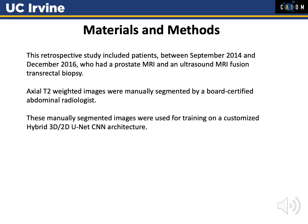For this paper, a retrospective study was completed with patients who had a prostate MRI or ultrasound-MRI fusion transrectal biopsy between September 2014 and December 2016. The axial T2-weighted images were manually segmented by a board-certified abdominal radiologist. These manually segmented images were then used for training on a customized hybrid 3D-2D U-Net CNN neural network.